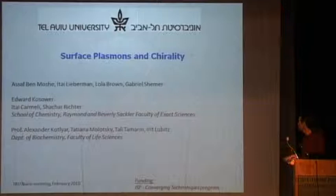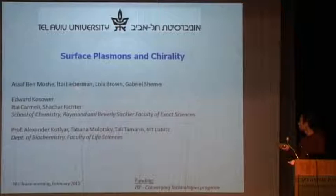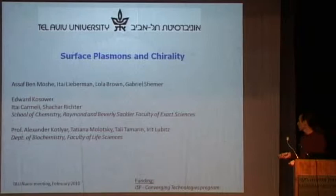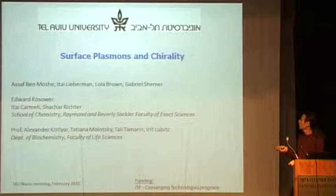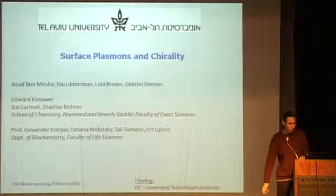Gabi started and is now a postdoc at Weizmann. Lola did her masters and is now doing a PhD at Cornell. Itai did her masters and is now at the Hebrew University at some startup. And Asaf, who is here in the audience, is currently working on that. Most of what I will be talking about is a collaboration with a group at the Department of Biochemistry — Sasha Kotliar and several students and a postdoc in his group. Other collaborators include Ed Kosovo, Itai Karmeli, and Shachar Richter from our department.